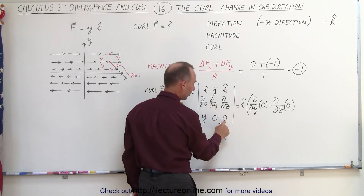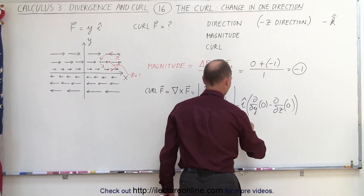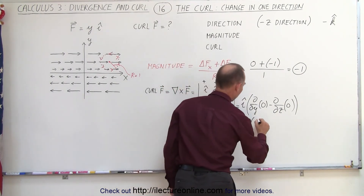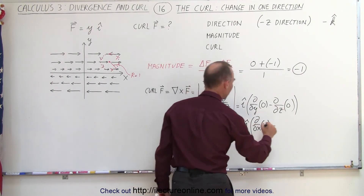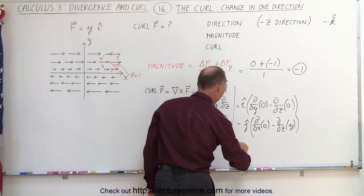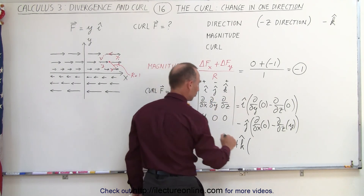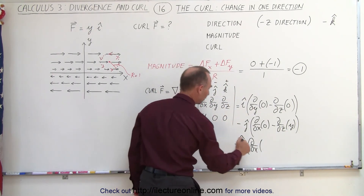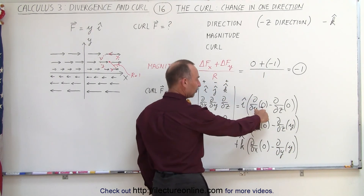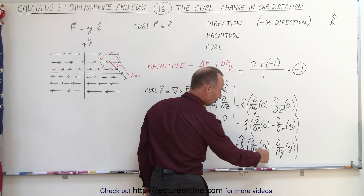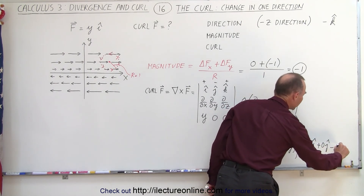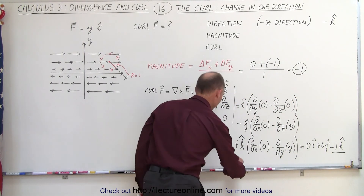It's the partial with respect to y of this, minus the partial with respect to z of this. Then minus j times the partial with respect to x of 0, minus the partial with respect to z of y. And finally, plus k times the partial with respect to x of 0, minus the partial with respect to y of y. Notice that the i term becomes 0, the j term becomes 0, and the k term gives 0 minus 1, which is negative 1. So the result is 0i + 0j − 1k, equal to −k.